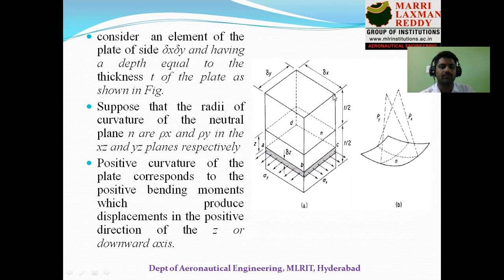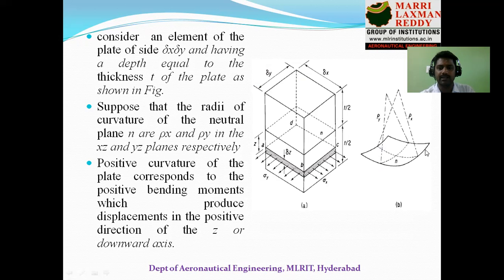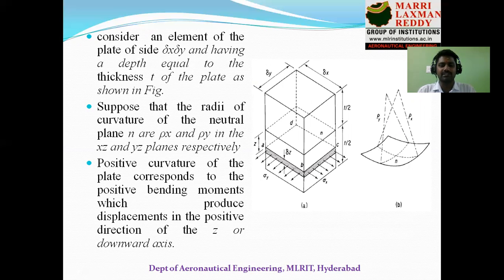Let delta x be the plate dimension in the x-axis and delta y be the plate dimension in the y-axis. When Mx is acted alone on the two edges, the plate takes a curvature shown in figure b, given by rho x — that is the curvature due to moment Mx. Similarly, when My is applied alone, it gives a curvature rho y. When both Mx and My act simultaneously, you get both curvatures. Positive curvatures due to positive bending moments produce positive displacements in the z direction.